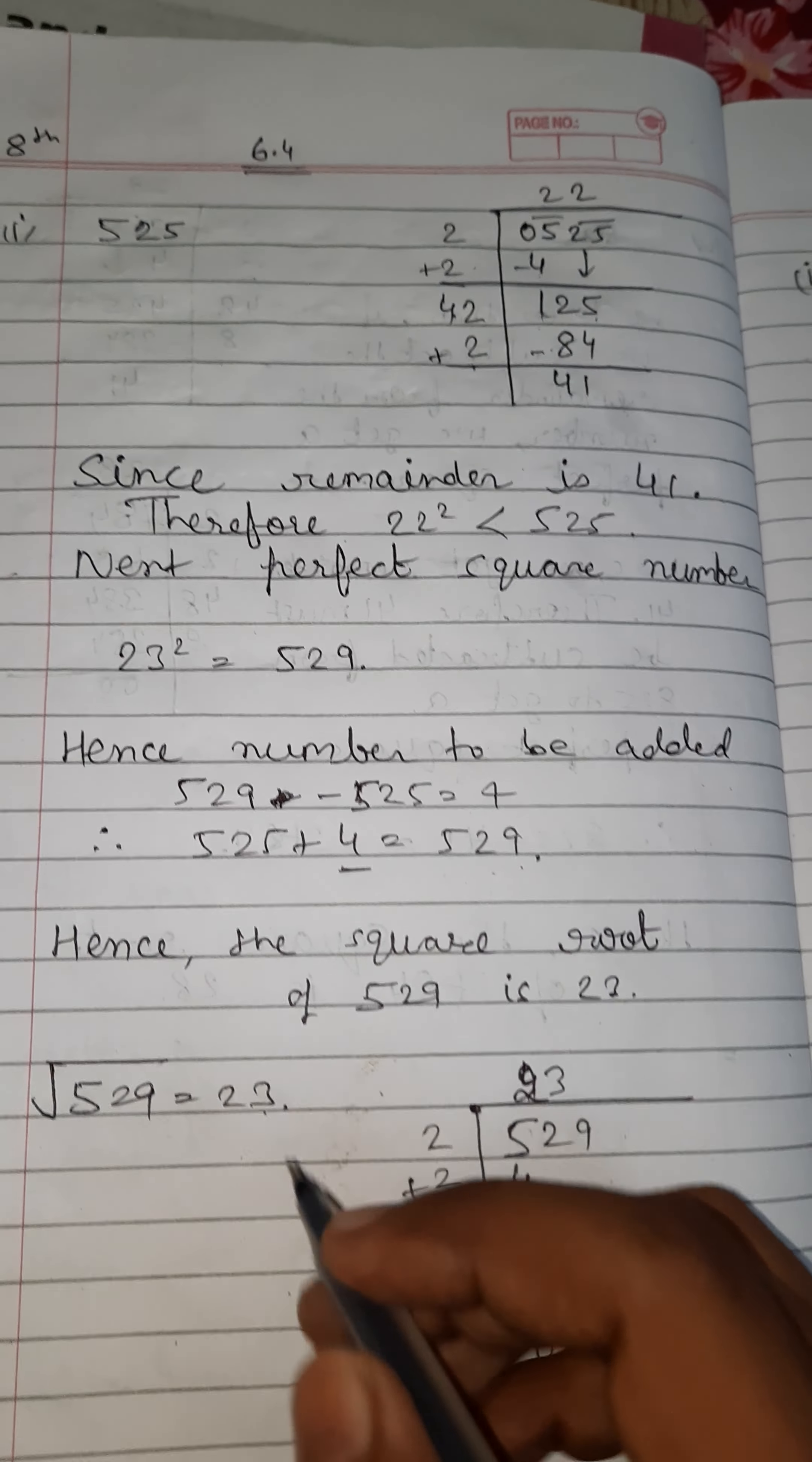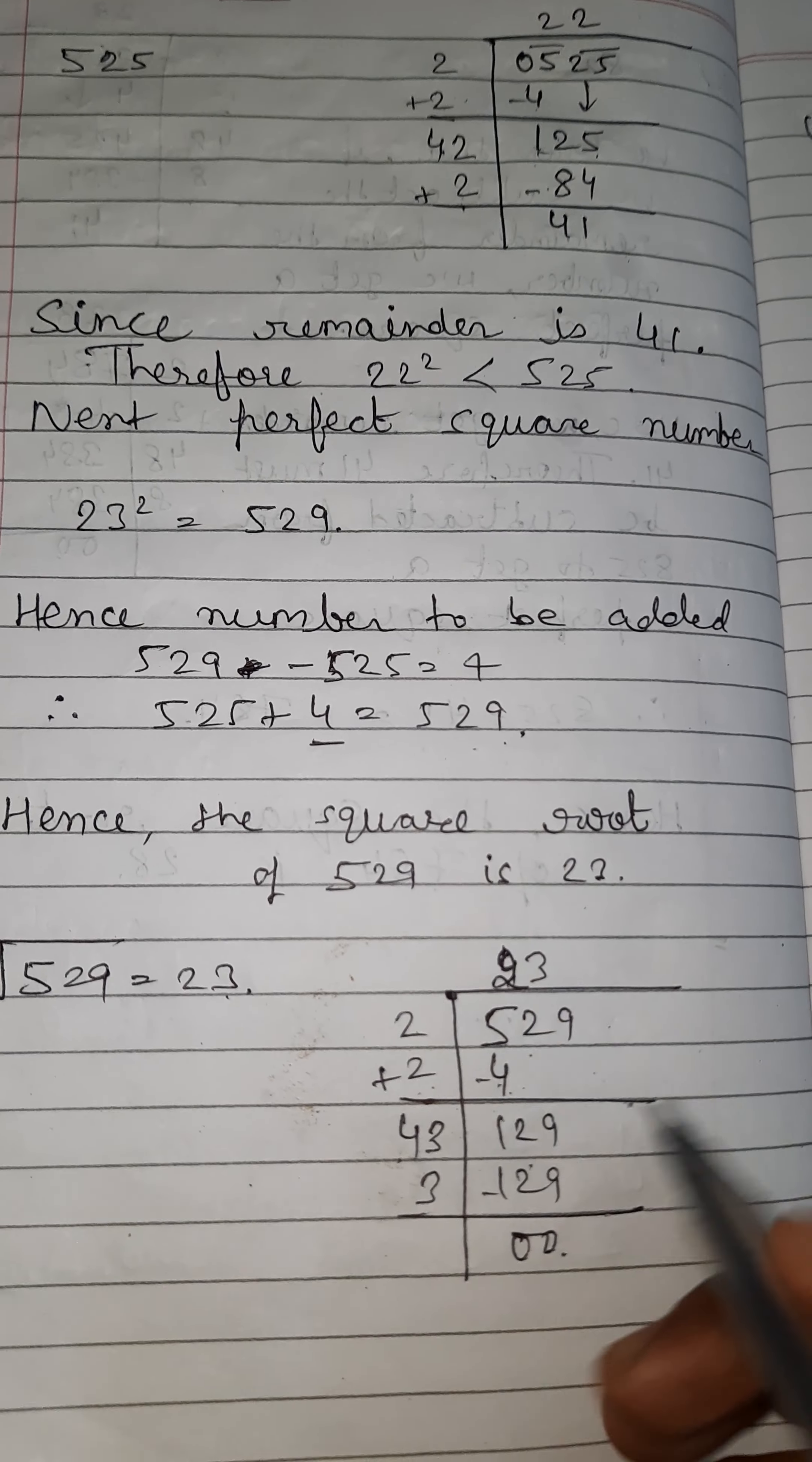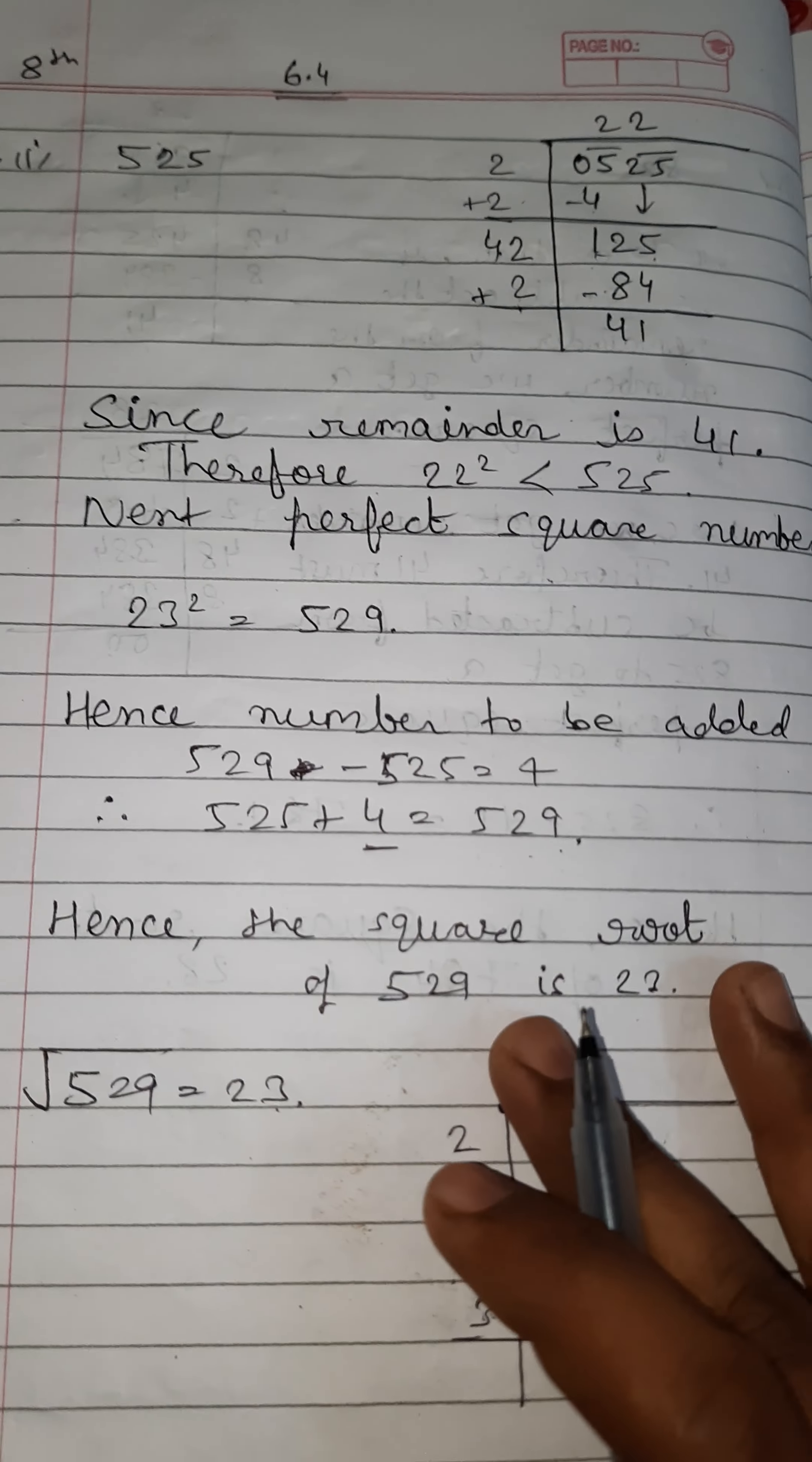525 plus 4 equals 529. Hence the square root of 529 is 23. Now find the square root of 529 by division method. Put 2 times 2 equals 4 here, and 2 plus 2 equals 4 here. Now 5 minus 4 is 1, and 29 brought down becomes 129. Put 3 here: 3 times 3 is 9, and 3 times 4 is 12, making 23. 129 minus 129 equals 0. So the square root of 529 is 23, and 4 is the least number that can be added to 525 so 529 becomes the perfect square of 23.